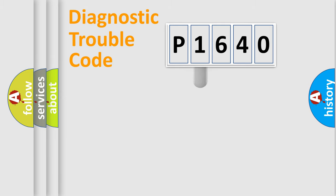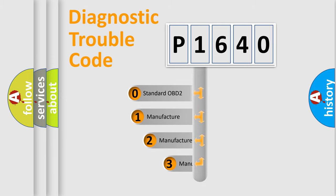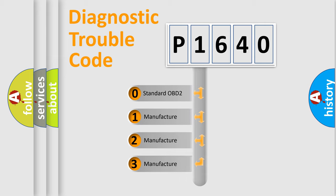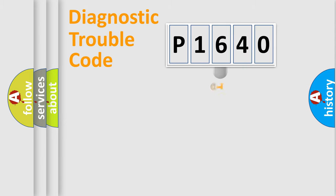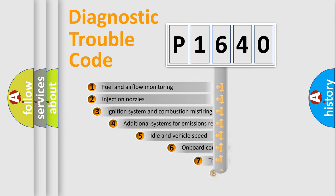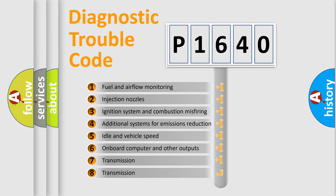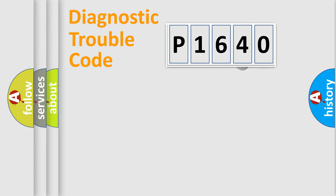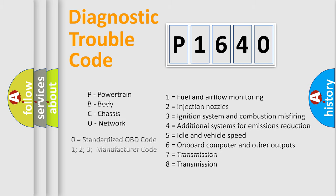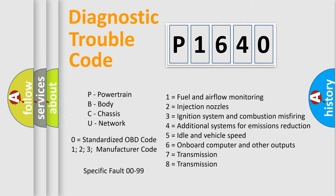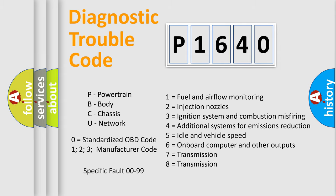This distribution is defined in the first character of the code. If the second character is expressed as zero, it is a standardized error. In the case of numbers 1, 2, or 3, it is a more specific expression of the car-specific error. The third character specifies a subset of errors. This distribution is valid only for the standardized DTC code, and only the last two characters define the specific fault of the group.